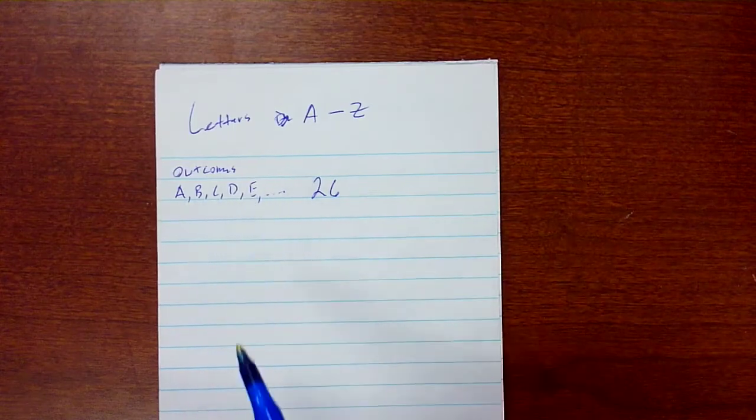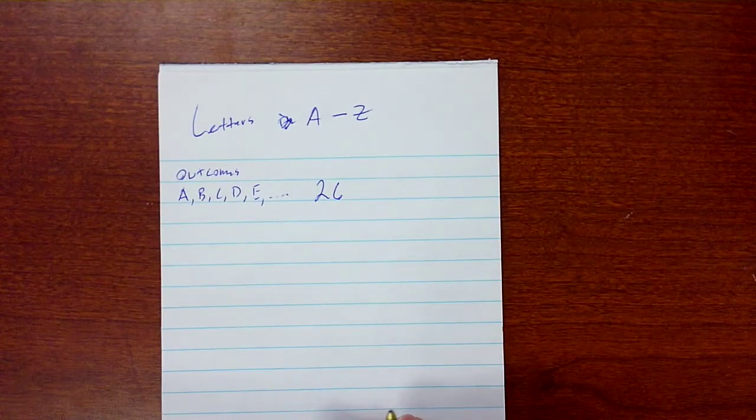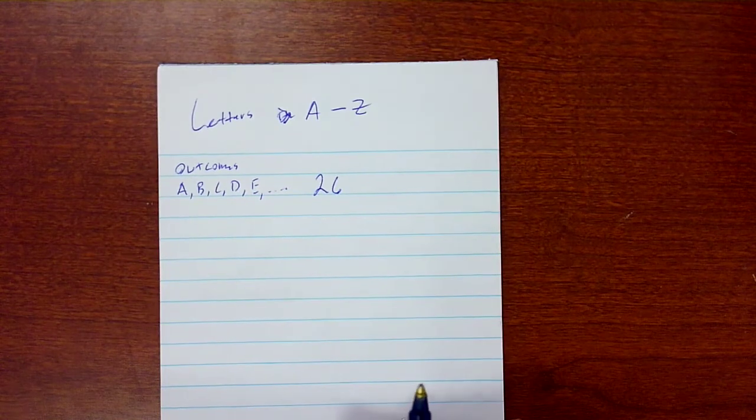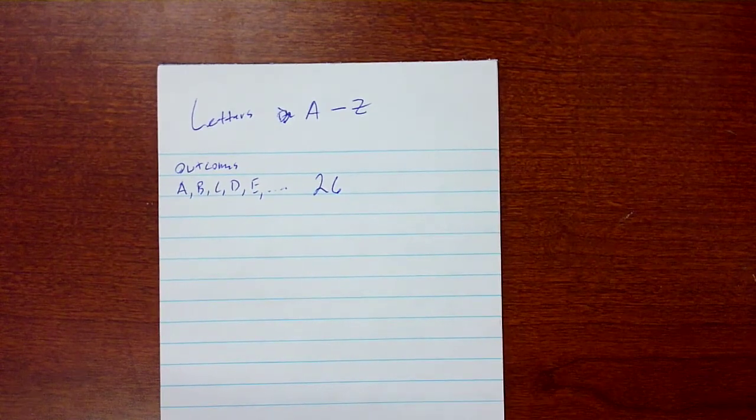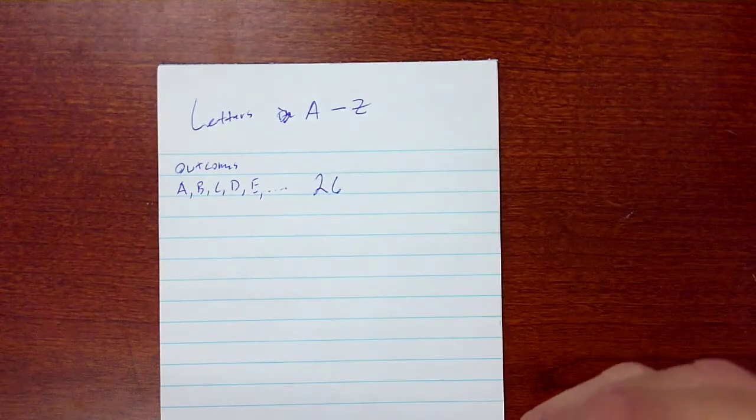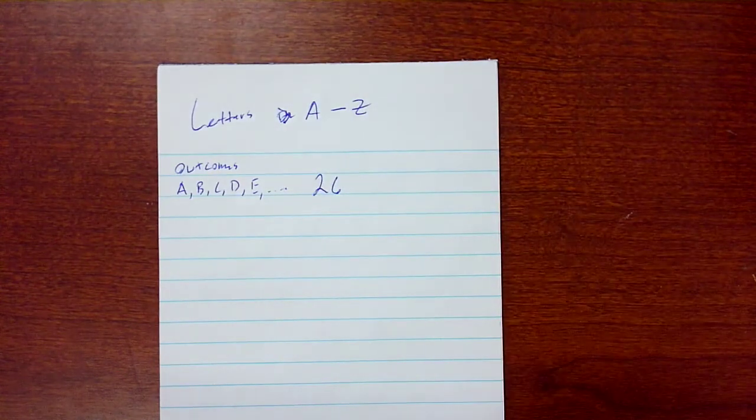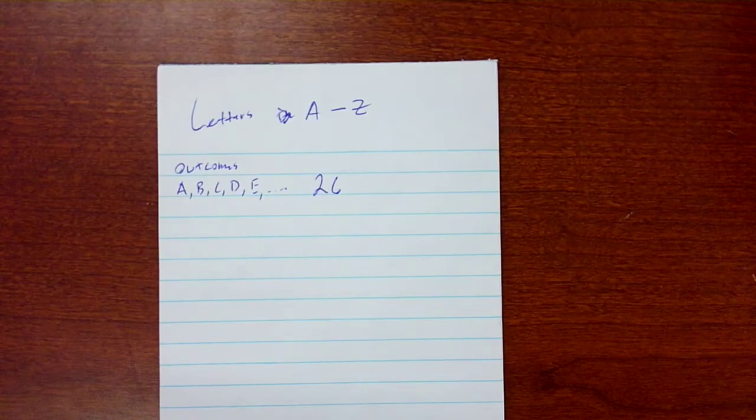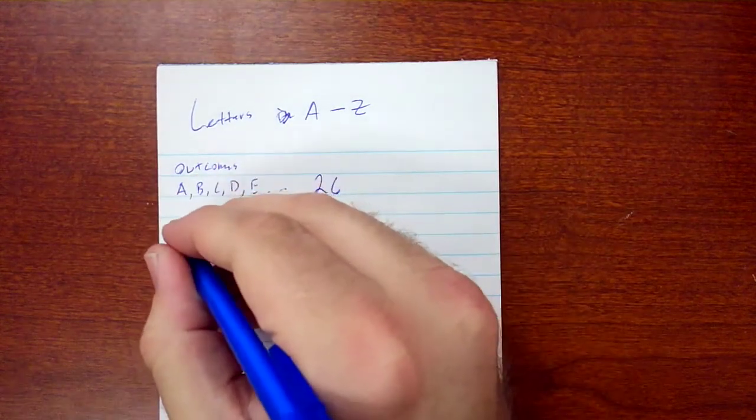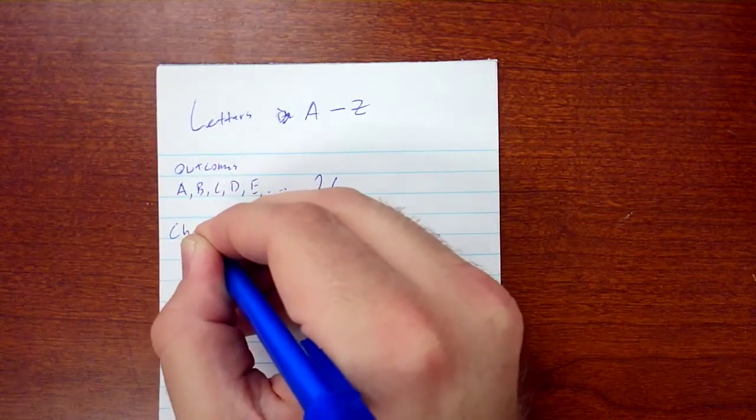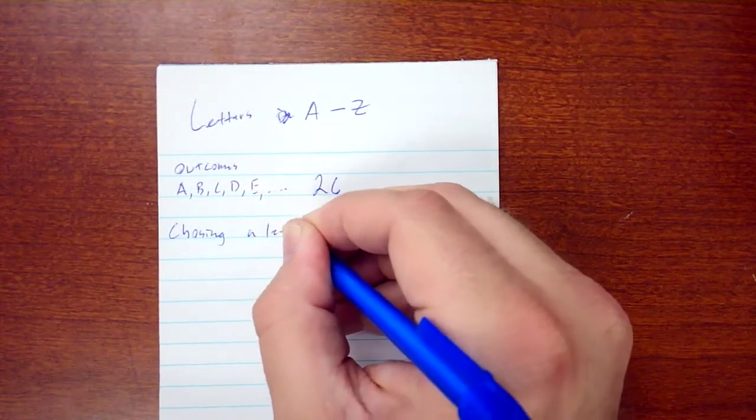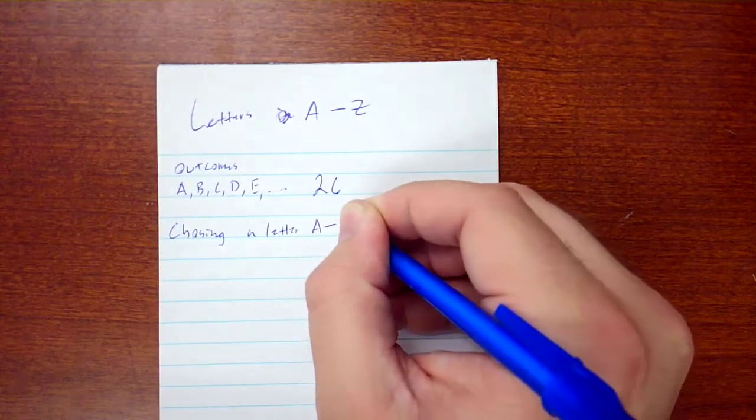Those are our possible outcomes. Let's look at our specific situation. We want to choose a letter that is A through K.